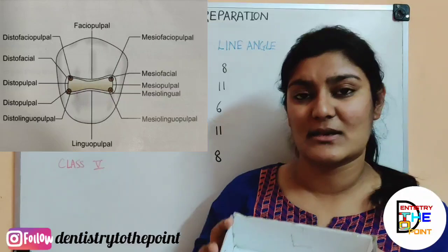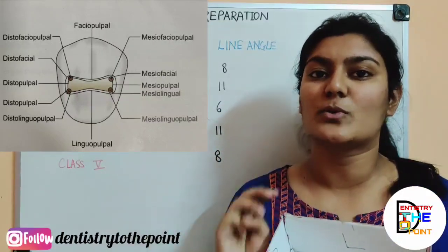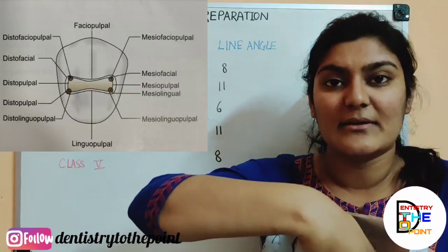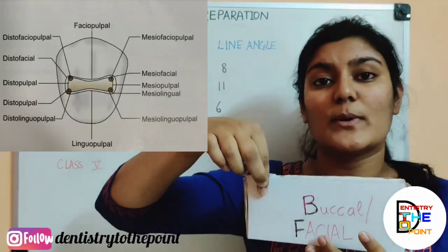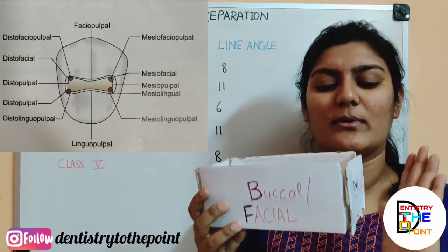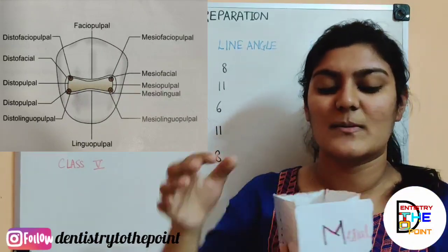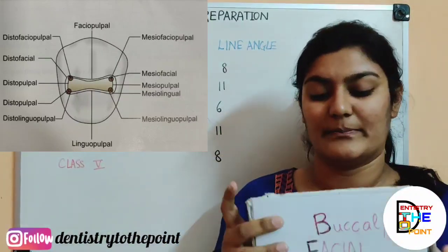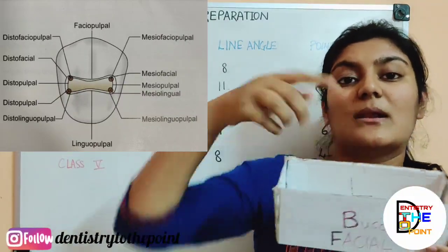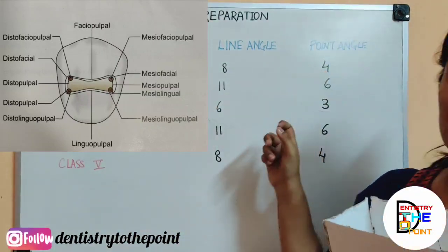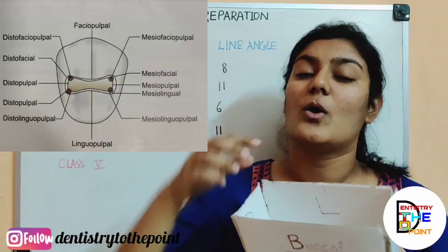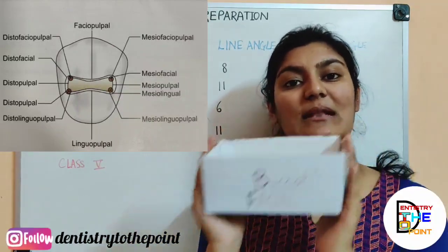Now for point angles — four in total for class 1. A point angle is where three surfaces of different orientation meet. The buccal surface, mesial surface and pulp all meet — forming the mesio-facio-pulpal point angle. Similarly: mesio-linguo-pulpal point angle, disto-facio-pulpal point angle, and disto-linguo-pulpal point angle. So four point angles total for class 1. Two surfaces meeting: line angle. Three surfaces meeting: point angle.